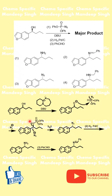When it attacks, the azide leaves, forming this particular intermediate. The azide then attacks from the backside, essentially converting the secondary alcohol into an azide with inversion of configuration.